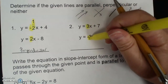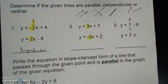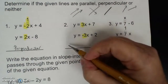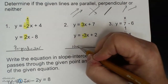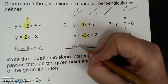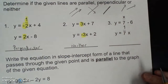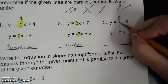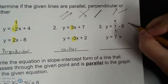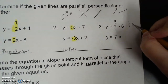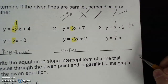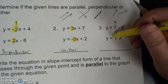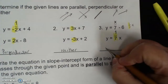Here the slopes are 3 and negative 3. They are not the same, so not parallel. I multiply the slopes together and get negative 9 — that's not negative 1 — so that's neither. For the next example, x over 7 is the same as 1 seventh times x, so the slope is 1 seventh and 1 seventh, meaning the lines are parallel.